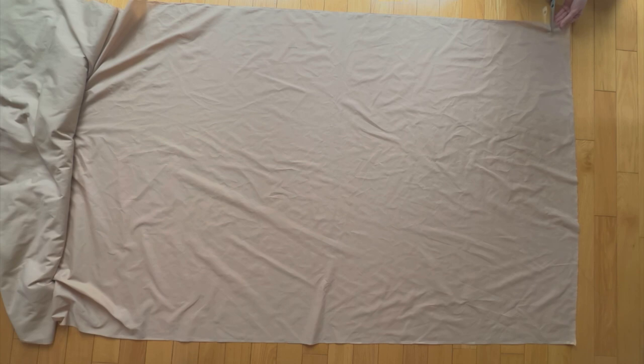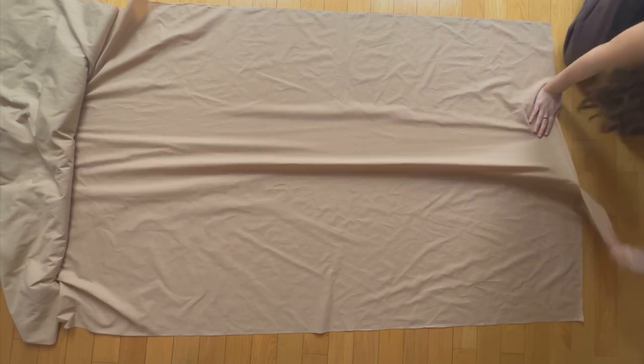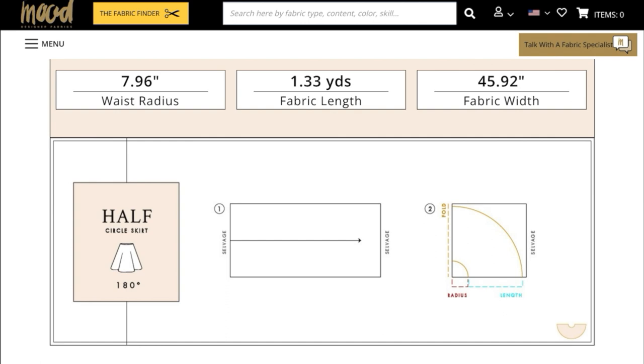Before you start cutting woven fabrics, you want to make sure that the edge of your fabric is straight. Cutting it with scissors won't be enough. What you want to do is make a little cut at the bottom near the edge and tear it. This will make sure that the crosswise grain is straight.